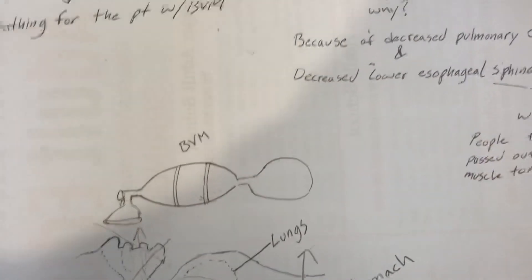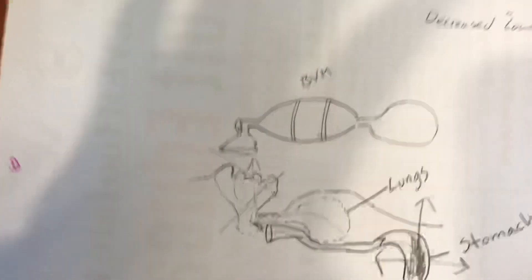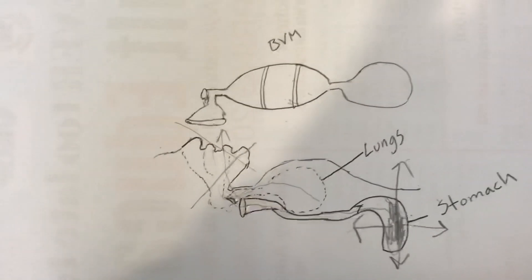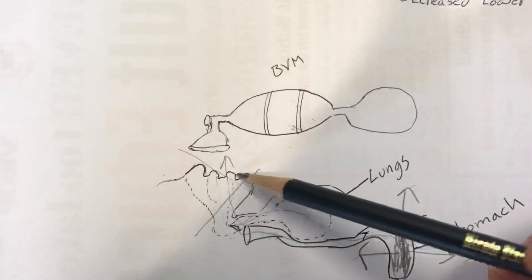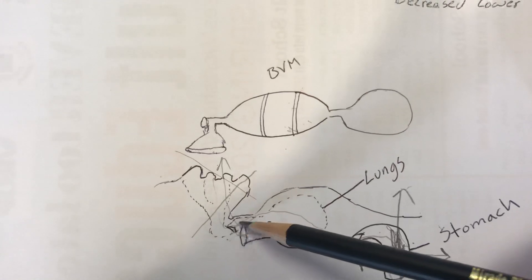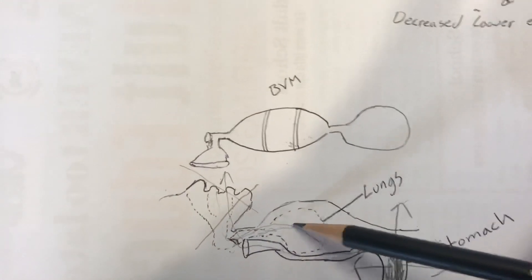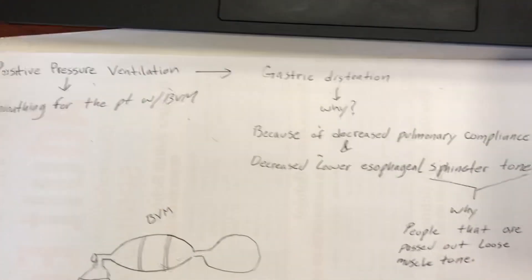That's why gastric distension is kind of a big deal. One, you have a big mess with all the vomit, and two, some of that vomit can go back into the trachea, the windpipe, and cause bigger issues.